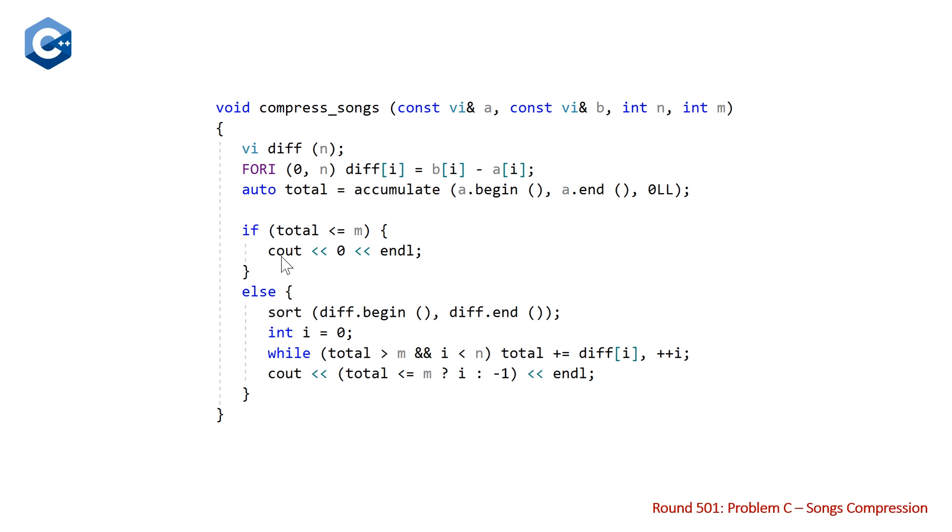Then we have a little if statement to deal with the condition where initially our total is already less than our target, which means we don't need to compress any songs and we can just output zero.